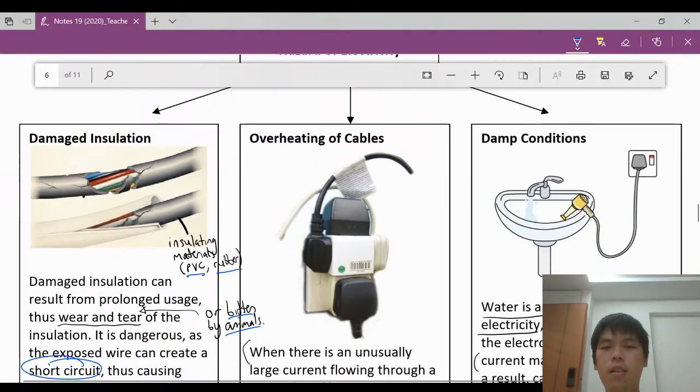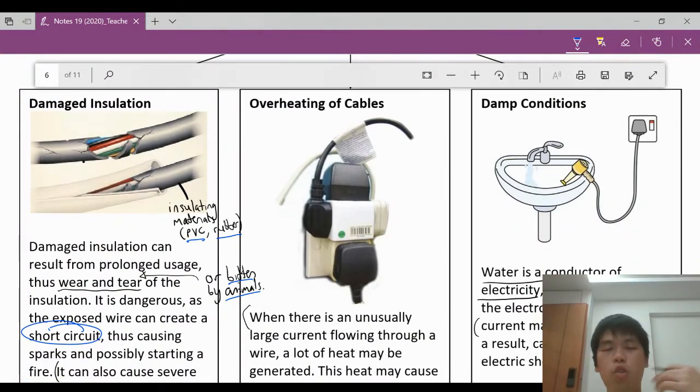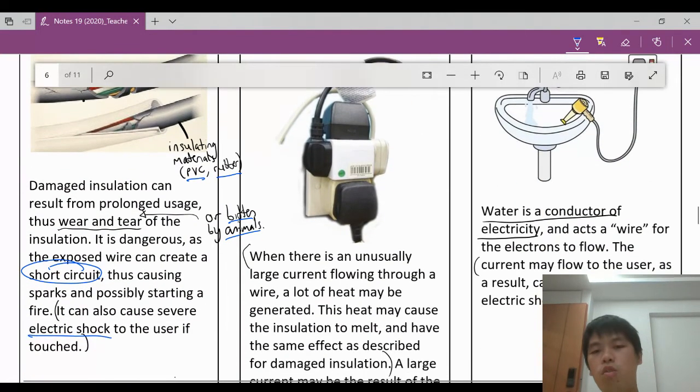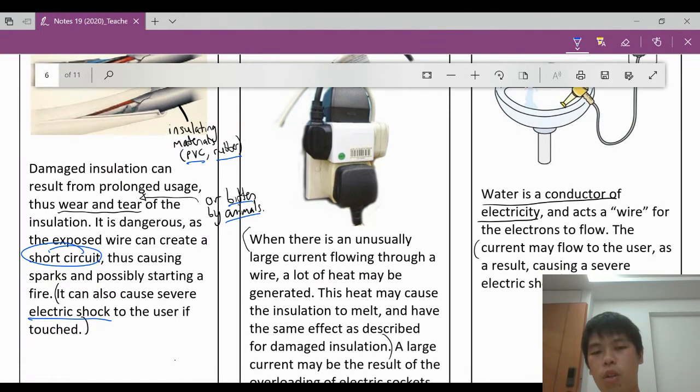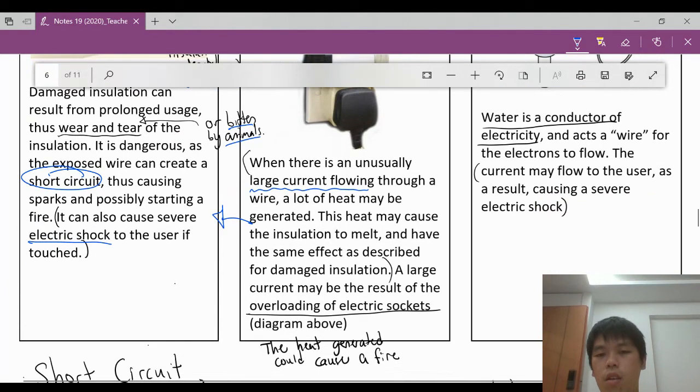So let's go back to the next hazard. Overheating of cables. We also know this as overloading. So when there is overloading, what will happen is there will be a large current flowing through the wire. When there's a large current flowing through, the wire will heat up. This will cause the insulation to melt. And it will go back to our previous case. Once it's melt, it can cause an electric shock if people were to touch it.